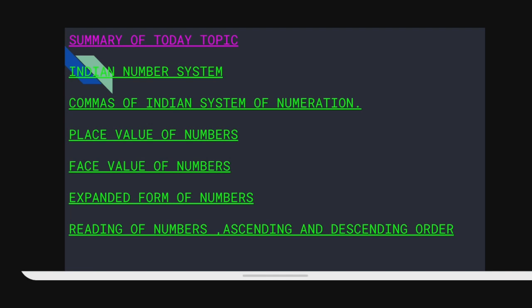Summary of today's topic. What we have seen so far: first, the Indian number system; second, commas in the Indian system of numeration; third, place value of numbers; fourth, face value of numbers; next, how to write numbers in expanded form; and finally, reading of numbers, and how to write ascending order and descending order. This is what we have covered today.